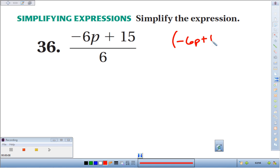Of course, dividing by 6 is the same as multiplying by one sixth. So really, we could use the distributive property and say a sixth times negative 6p and a sixth times 15.